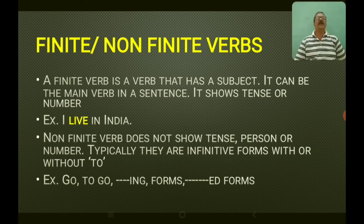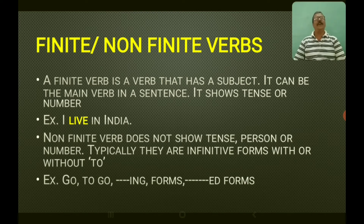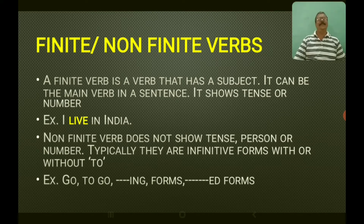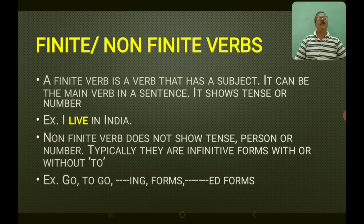For example: go, to go, going — and other forms such as -ed forms and V3 forms — they are all called non-finite verbs. For example: 'I want to go home.' Here 'I want' is the finite verb, and 'to go' is the non-finite verb because it doesn't show you the tense, number, or person.